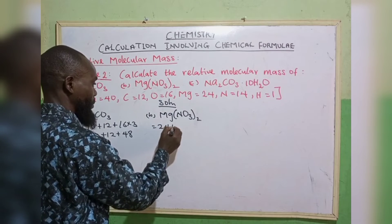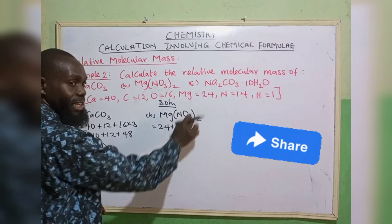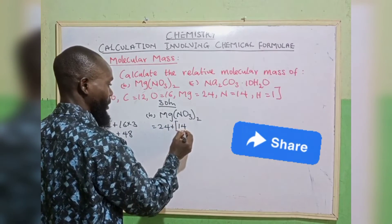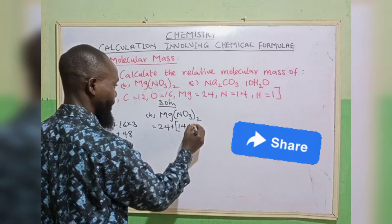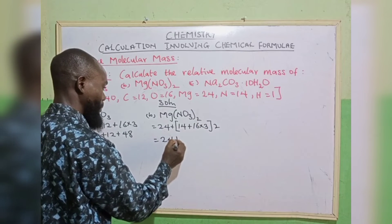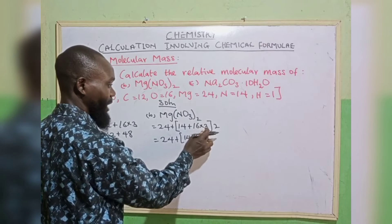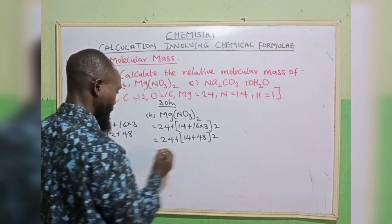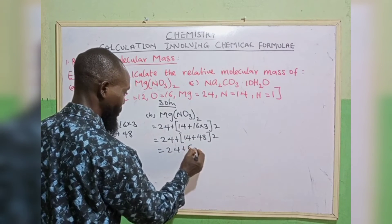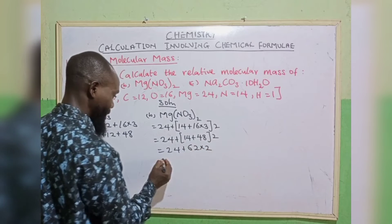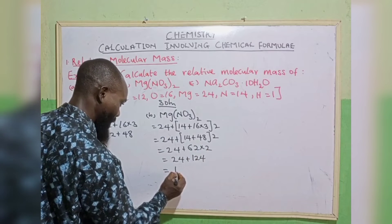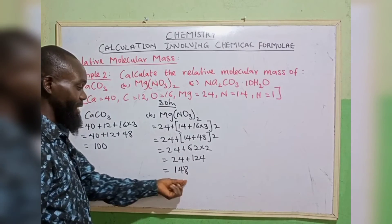The next compound is Mg(NO₃)₂. Magnesium is 24. The subscript 2 applies to everything inside the bracket. Inside the bracket: nitrogen is 14 plus oxygen (16) multiplied by 3 gives 48, so 14 plus 48 gives 62. Now multiply the bracket by 2: 62 times 2 gives 124. Summing up: 24 plus 124 gives a relative molecular mass of 148.